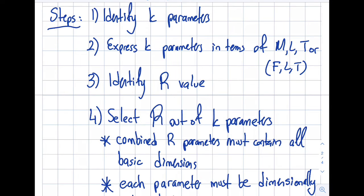In step number four you're gonna select R value that you identified in number three. Most of the cases it will be number three will be the R. It will be MLT or FLT because in real life most of the parameters will be functions of MLT or FLT. So you're going to select let's say three out of these let's say five parameters and this is the step that I see most of the issues.